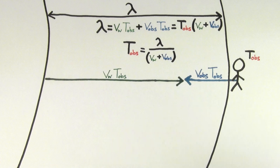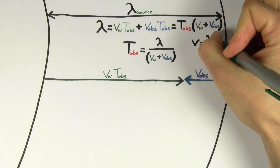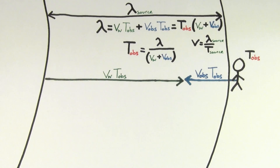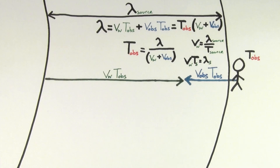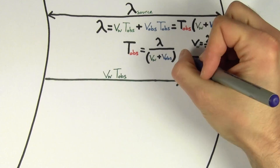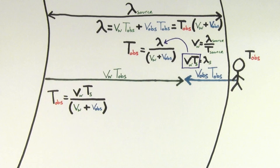So this is a perfectly fine equation for the period experienced by a moving observer, but one side is in terms of period and the other in terms of wavelength. So if we want to compare apples to apples, we can put the wavelength in terms of period using the formula: the velocity of the wave equals the wavelength of the source divided by the period of the source. Solving for wavelength gives us the speed of the wave times the period of the source. Plugging this in, the observed period equals the speed of the wave times the period of the source, divided by the speed of the wave plus the speed of the observer.